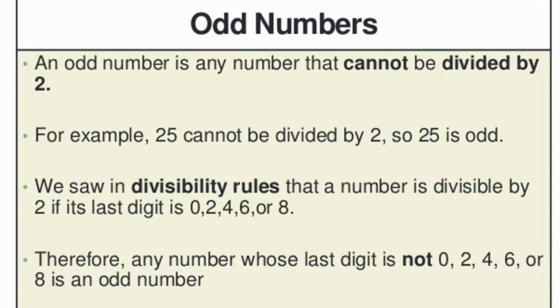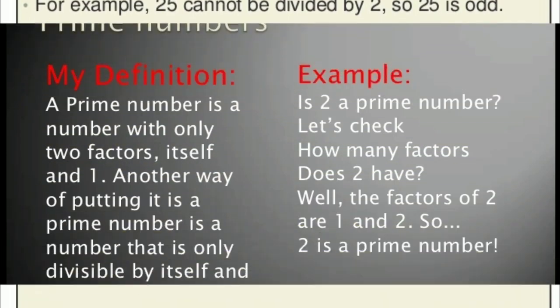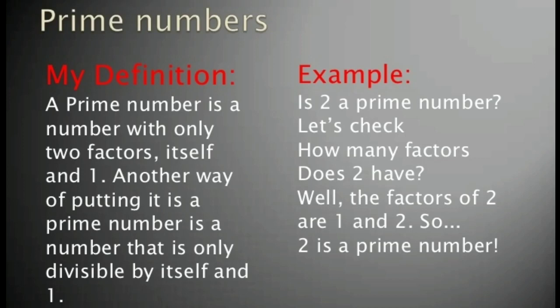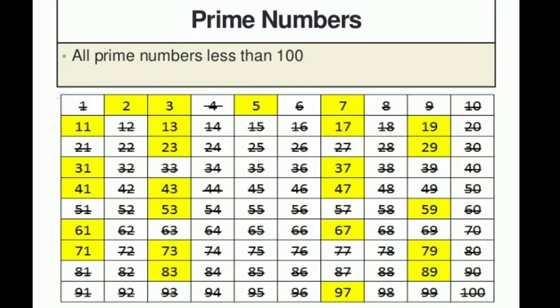The next category is prime numbers. A prime number is a number which has only two factors — that is, 1 and itself. It means a prime number can only be divided by 1 and itself. For example, is 2 a prime number? The factors of 2 are 1 and 2, meaning 2 cannot be divided by any number except 1 and 2. So 2 is a prime number. Looking at the table, all the yellow-colored numbers are prime numbers — that is, 2, 3, 5, 7, and so on — listing all prime numbers less than 100.